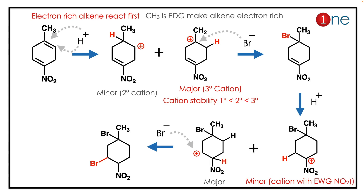The answer is interesting and involves many facts. First, the reaction happens at the electron-rich double bond where the methyl is attached. The nitro group is electron-withdrawing, making the other double bond electron-deficient. So H⁺ attacks the methylated alkene. There are two possibilities, but only the tertiary carbocation is stable, so the tertiary carbon forms predominantly. Then bromine attacks to give the intermediate product.